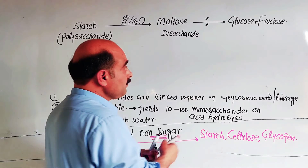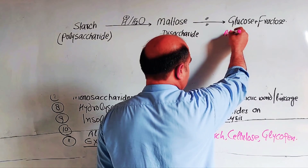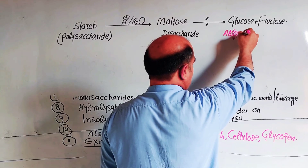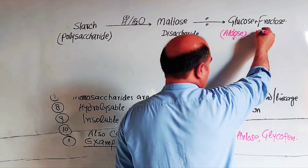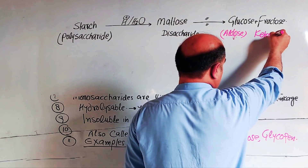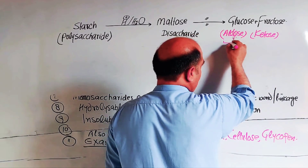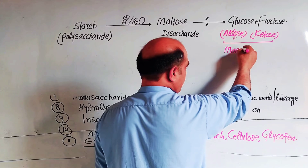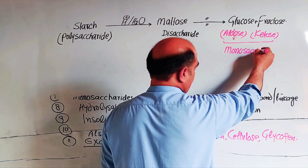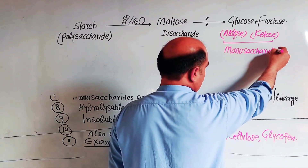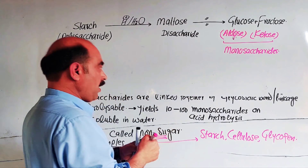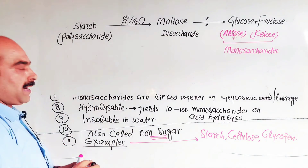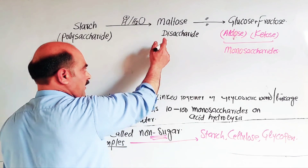Glucose is an aldose — it contains an aldehyde group. Ketose contains a ketone group. These are classifications of monosaccharides. The formula for disaccharides such as maltose is C12H22O11, while monosaccharides like glucose and fructose have the formula C6H12O6.